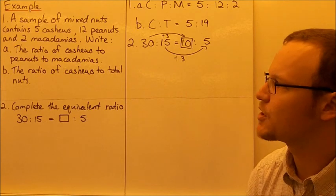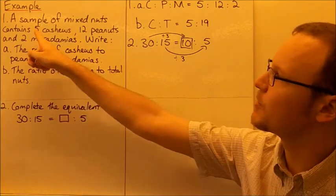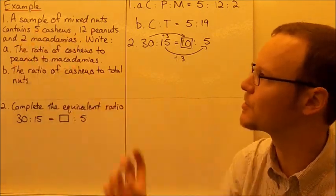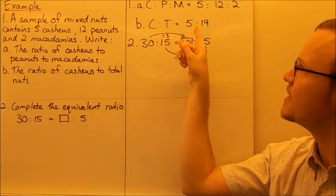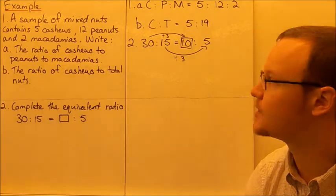Second one, the ratio of cashews to total nuts—the total number of nuts we have is five plus twelve plus two which is nineteen. So the ratio of cashews to total nuts is 5:19.